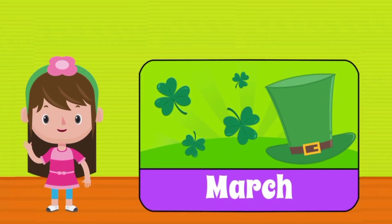March, the third month of the year, containing 31 days, coming after February.